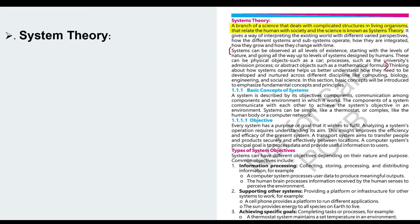Its definition: a branch of science that deals with complicated structures in living organisms. What is the most complicated system or structure? Living organisms - humans. How it relates to society, how it relates to science - we study this in detail in this field or this branch of science.